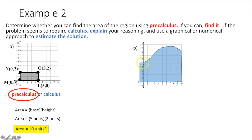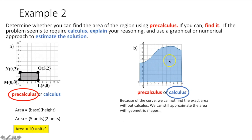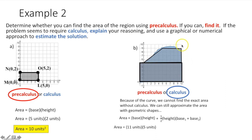For part B, we have a curved function, and finding the area under a curve is something you learn in calculus. But we can estimate using pre-calculus by breaking this up into a rectangle and a trapezoid. The rectangle has a base of 11 units and height of 5 units. The trapezoid has bases of 10 and 5 units and a height of 4 units. Using base×height for the rectangle and ½×height×(sum of bases) for the trapezoid, then adding them together gives an approximate area of 85 square units.